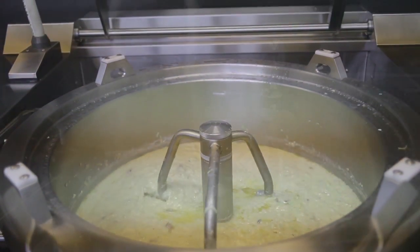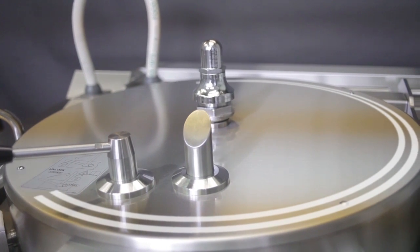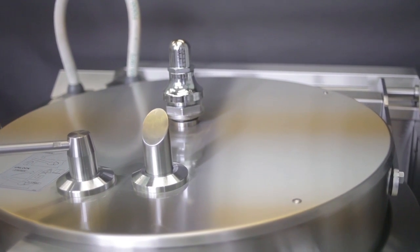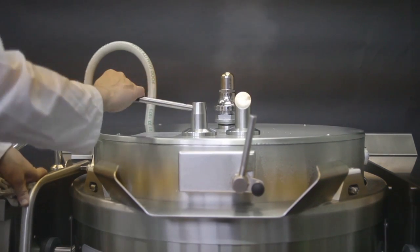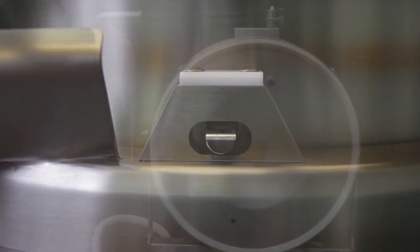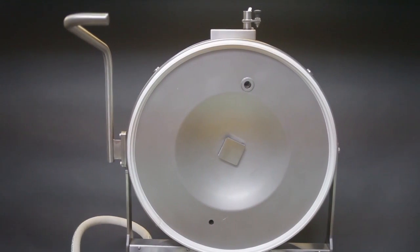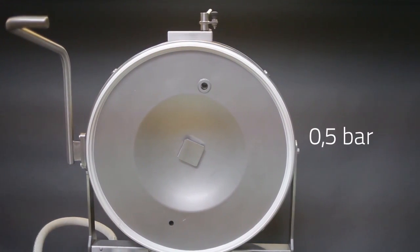The pressure cooker version has a lid with a reinforced double wall and a gas spring balance mechanism. The double manoeuvre opening and closing mechanism guarantees maximum safety. The rubber seal is in food-grade silicon and the safety valve is calibrated at 0.5 bar.